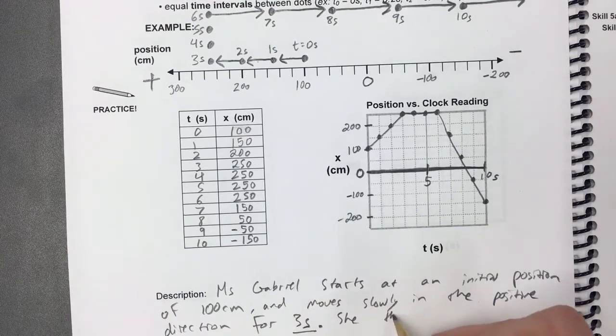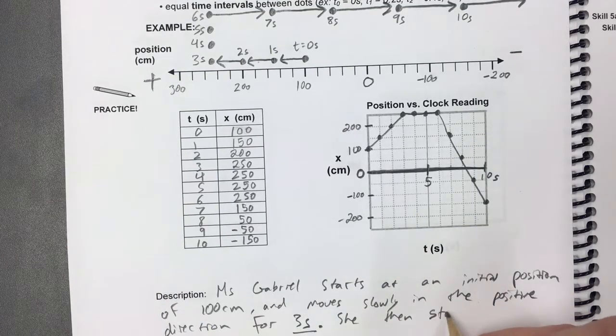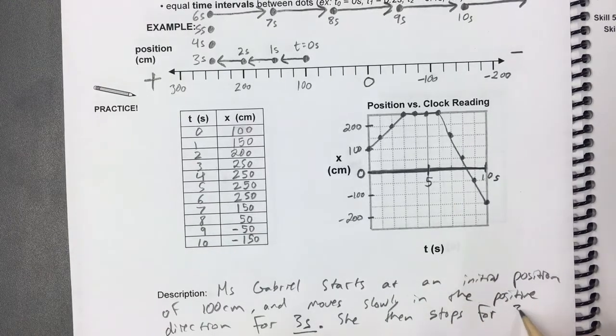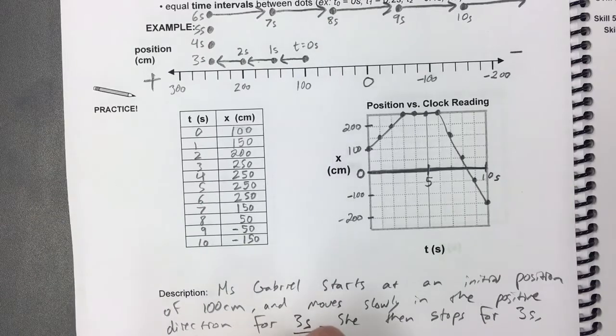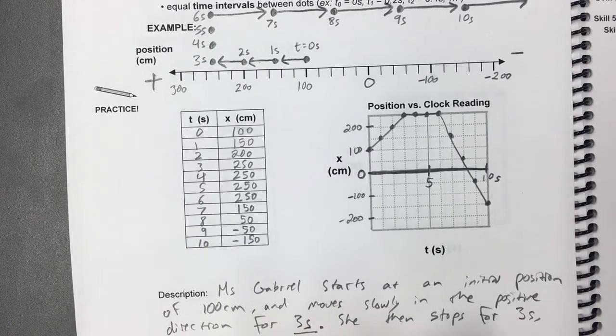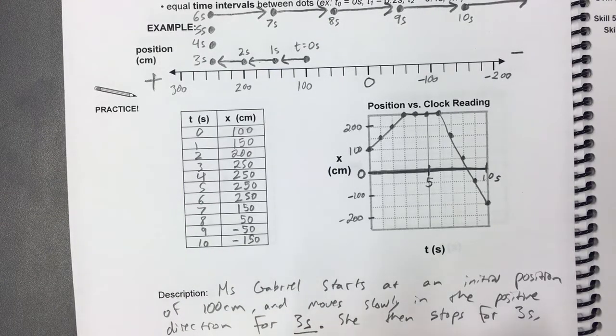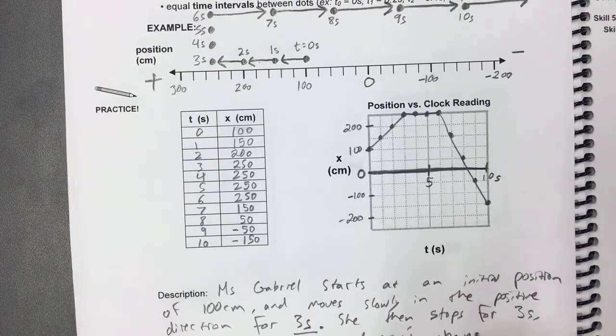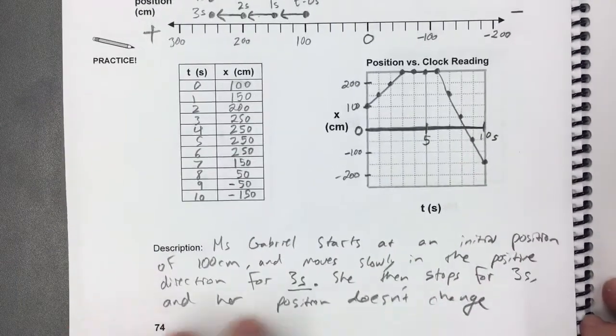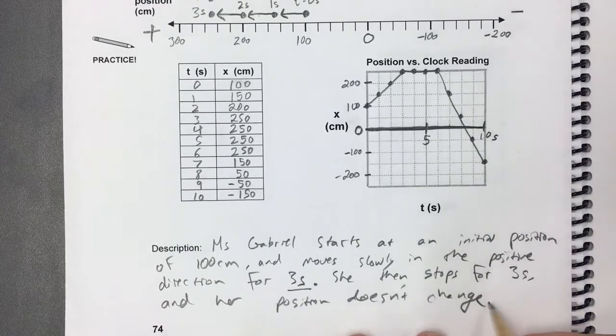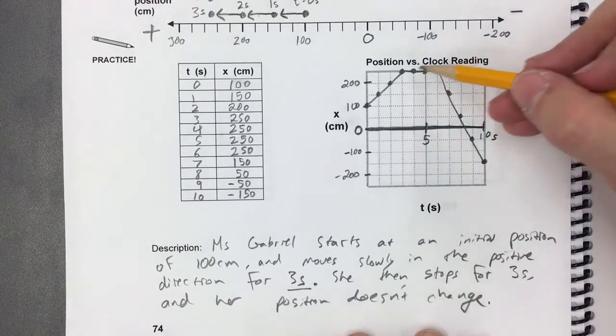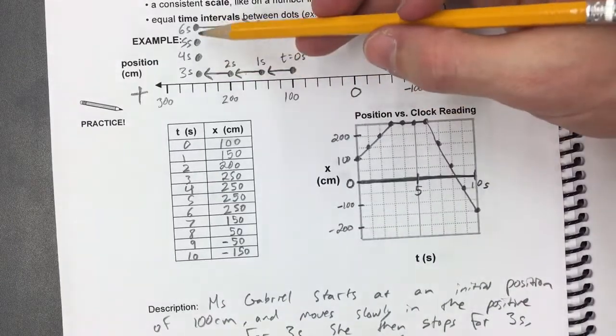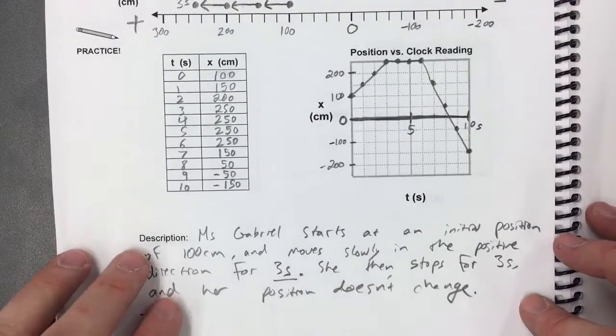She then stops for three seconds, and her position doesn't change. Sorry, my bad. And her position doesn't change. That's this part of the graph right here. That's this part of the motion map here when her position isn't changing at all.